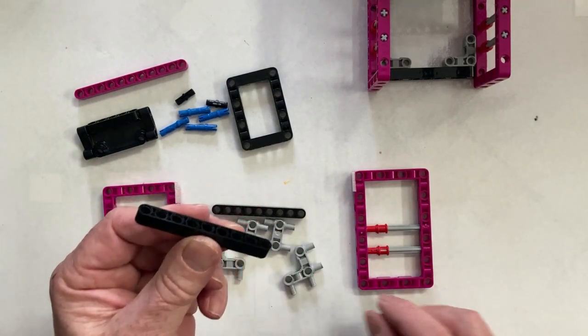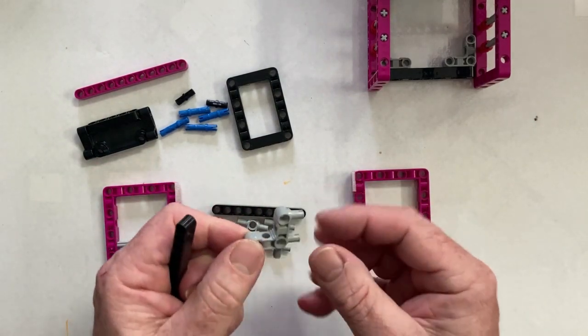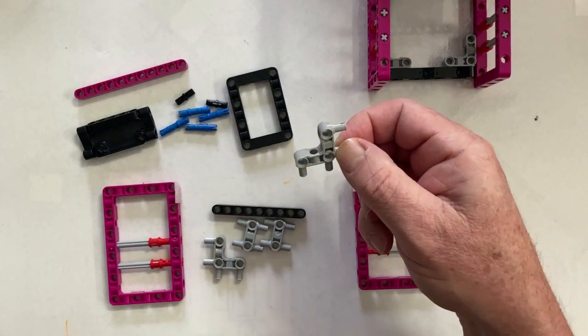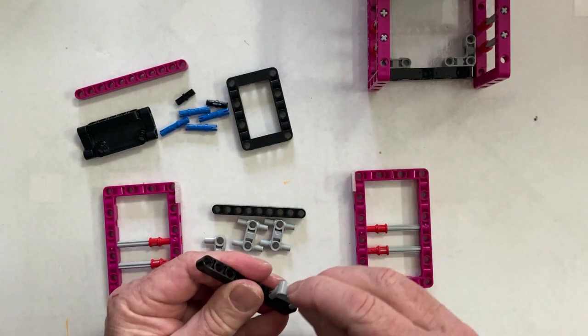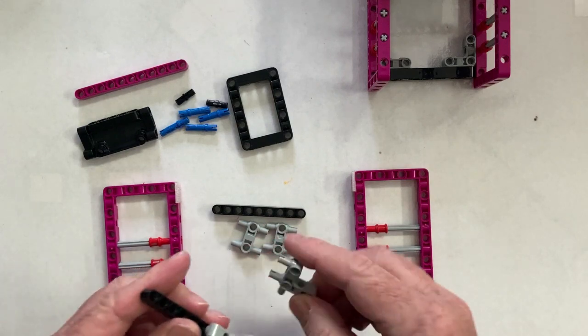Now we're going to build the cross pieces for the base and the rear. We take the pieces I call the llama because they kind of look like a llama. My favorite pieces. Put one at each end of the short black beam.